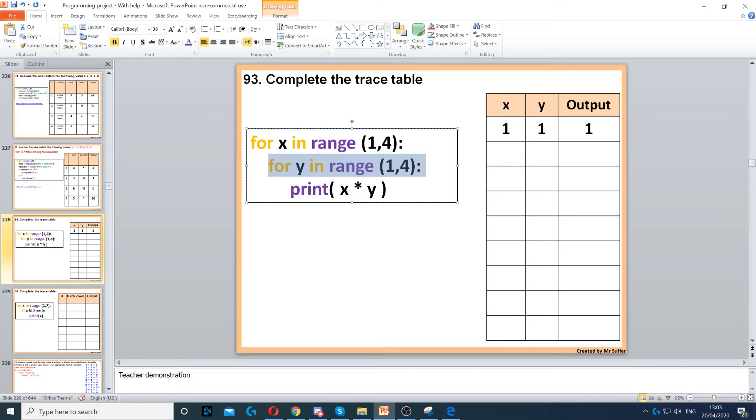So x is still 1 because we haven't finished the inner loop. We have to finish the inner loop before we go to the outer loop. So x will stay 1, it will not change, but y will change. It will increase to 2, then we have 1 times 2 which gives us 2. Then we go back to y and that increases again to 3, then 1 times 3 gives us 3.